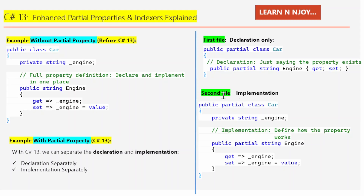In the second file, we implement the property. Here we have public partial class Car — marked public so it is accessible from other parts of the application, and partial to indicate it may have other parts defined elsewhere. Inside, I declared a private string field named underscore engine to hold the current engine value — private means it cannot be accessed directly outside the class. Then I provided the implementation: the getter retrieves the value of underscore engine, and the setter assigns a new value to underscore engine from outside the class. Before C# 13 we could not split properties like this — now we can, and it is a game changer for large projects or auto-generated code.